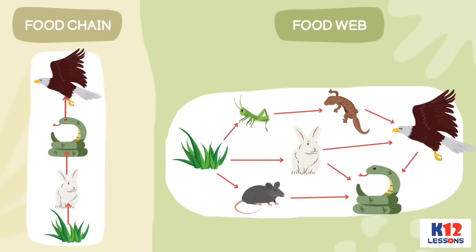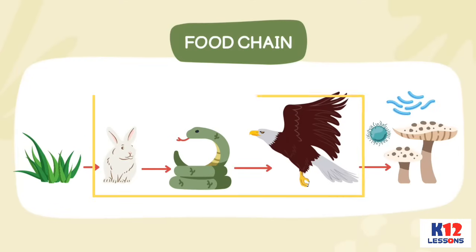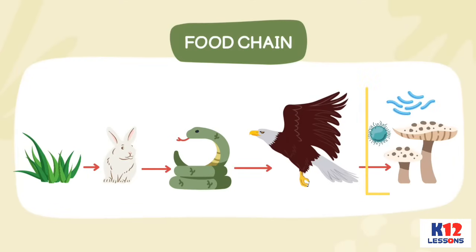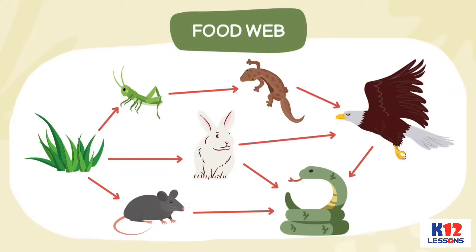Feeding relationships like food chain and food web occur among species in the forest ecosystem. A food chain starts with a producer, followed by a series of consumers and decomposers. A food web results from interconnected food chains.